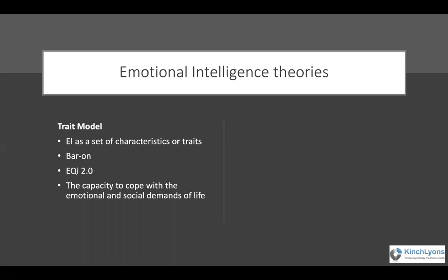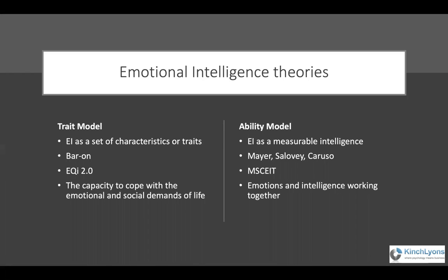In contrast, where we are today is the ability model, where emotional intelligence is seen as a measurable intelligence. This is based on the work of Mayer, Salovey and Caruso — that's the M, the S and the C in the MSCEIT. This model treats emotions and intelligence as working together, not a head versus heart, but emotions and intelligence working together to help us make decisions.